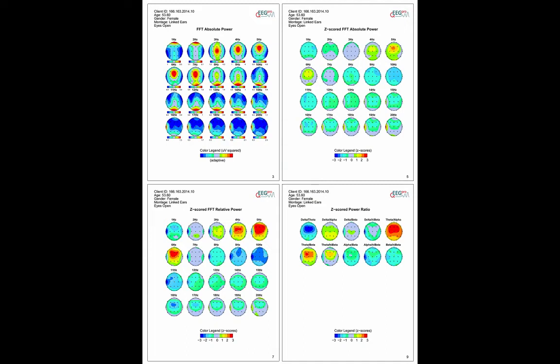QEEG Pro reports contain absolute power, relative power, and power ratio analysis. Both absolute power and relative power analysis consist of discrete frequency bins ranging from 1 to 40 Hz.